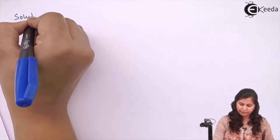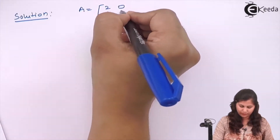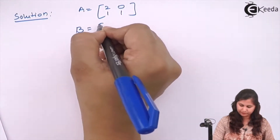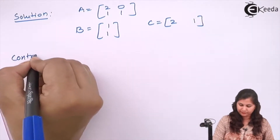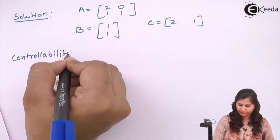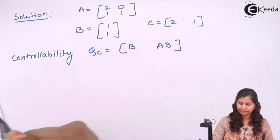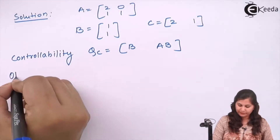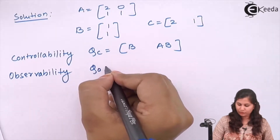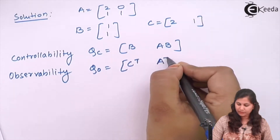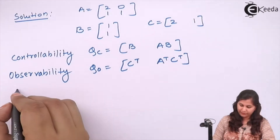For the first part, A is equal to [2, 0; 1, 1]. For controllability, we check the QC matrix which is [B, AB], and for observability we will check the Q0 matrix which is [C transpose, A transpose C transpose]. So we have to calculate AB.